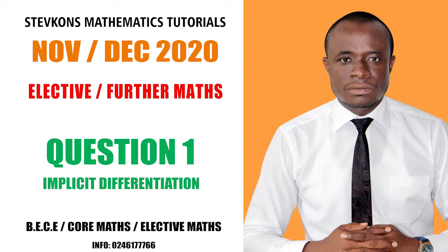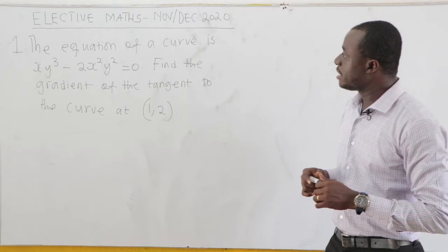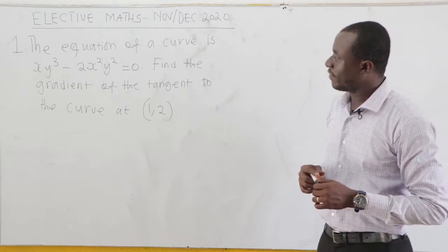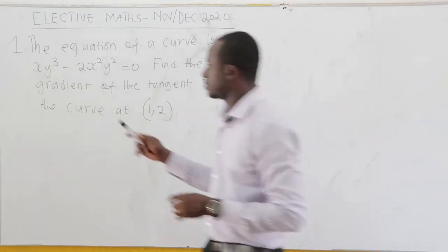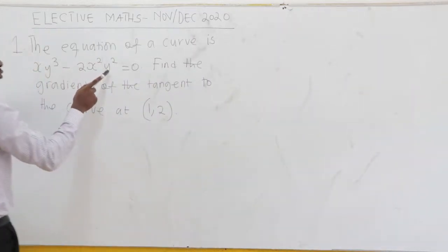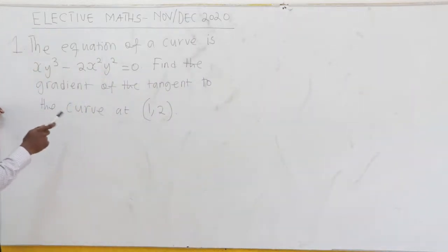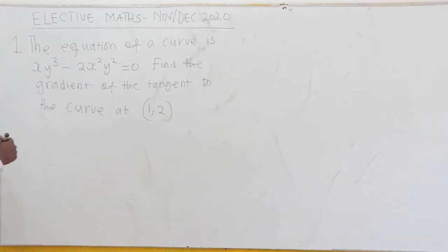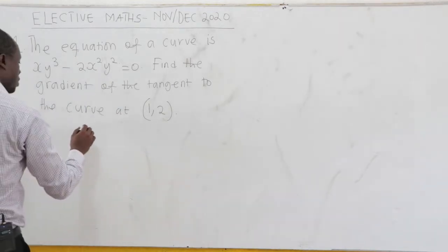Novik 2020, question number 1, elective math. The equation of a curve is xy cube minus 2x square y square root equals 0. Find the gradient of the tangent to the curve at the point (1, 2).